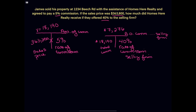But that's not what we're looking for either. This problem is asking how much Homes Here Realty made, and they are the listing firm. So we want to take that $18,190 and subtract from that the $7,276. That amount is going to give us what Homes Here Realty got to keep, and in this case that is going to be $10,914.